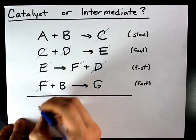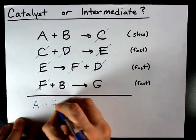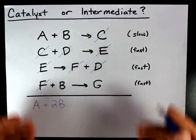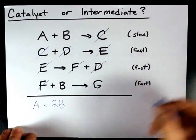Overall here, A was used up, but not recreated. Two B's were used up, but not recreated. And the only thing we created that wasn't used up later was G.